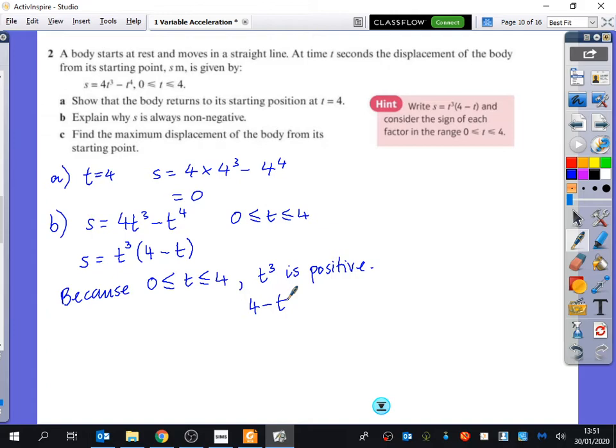And also, because t is between 0 and 4, what do we know about 4 minus t? It's always going to be greater than or equal to 0. If you just kind of think of a few different values you could put in there, well, if I put in 4, I would get 0. And if I put in 0, I would get 4. If I put in 1.5, I would get 2.5. You're always going to have a positive number.